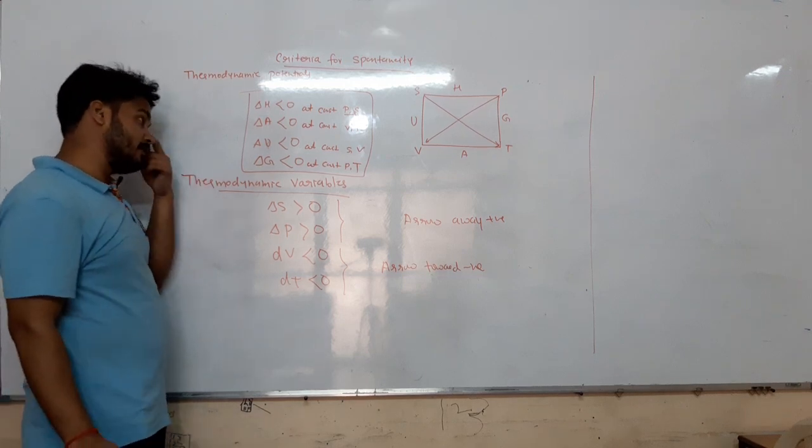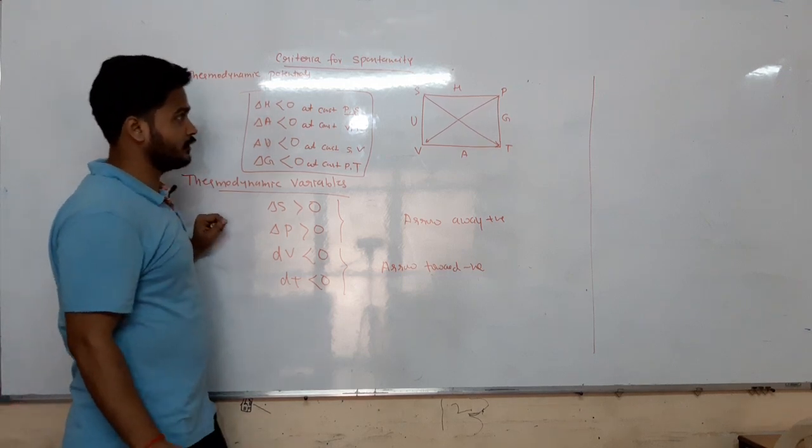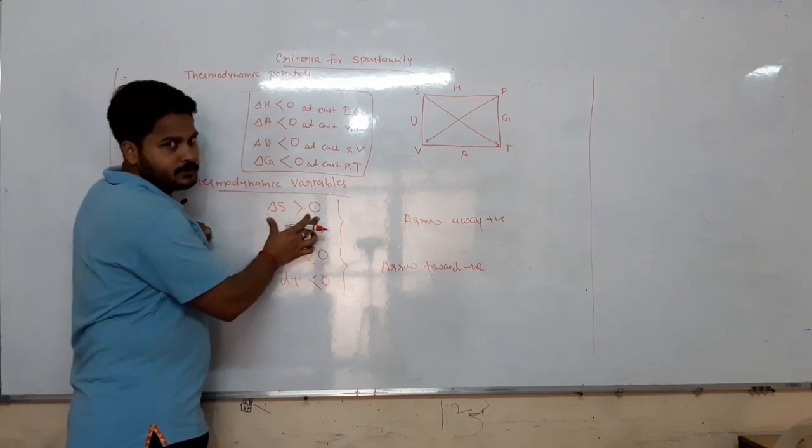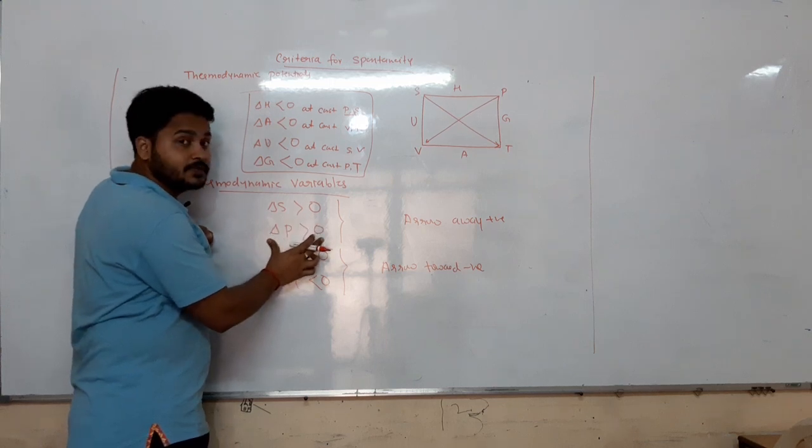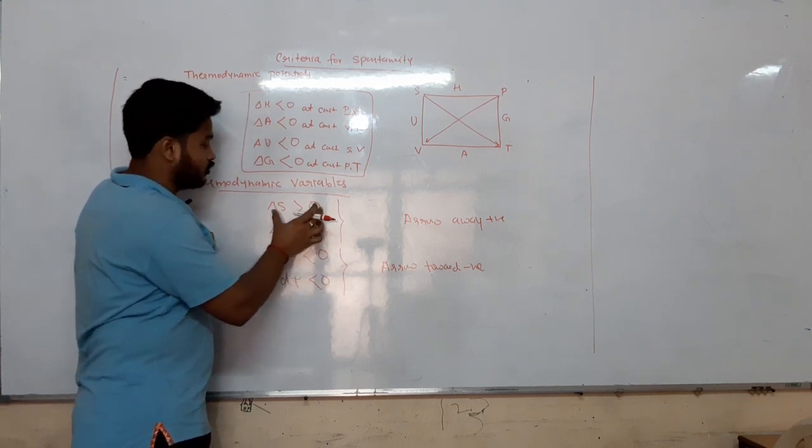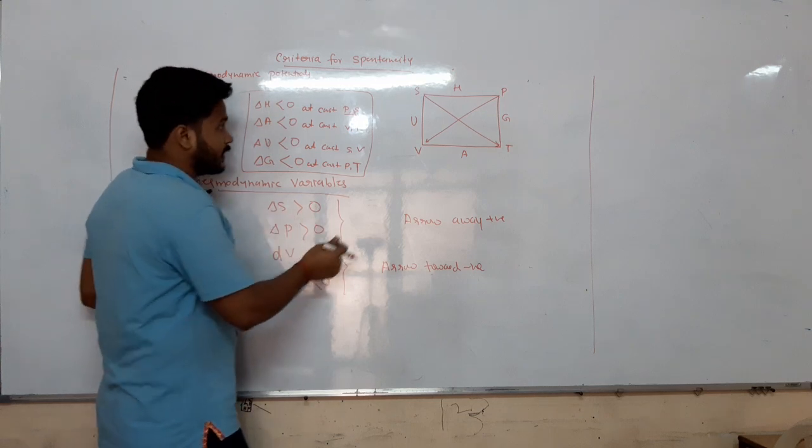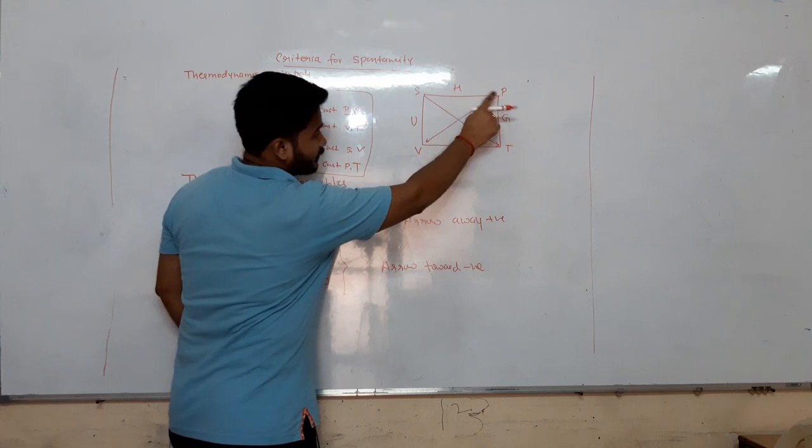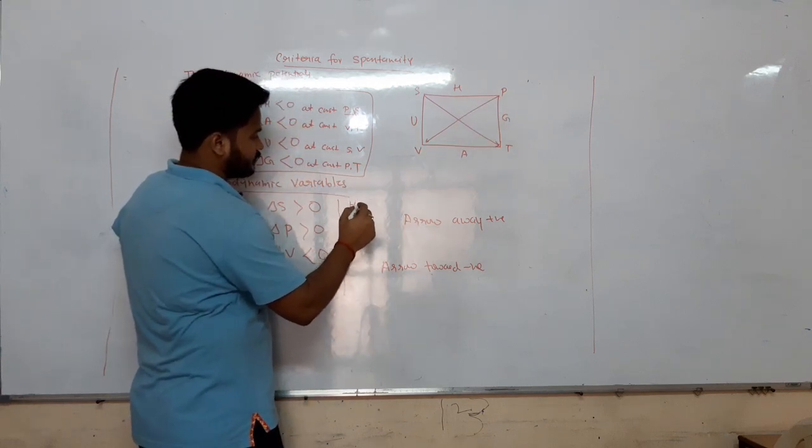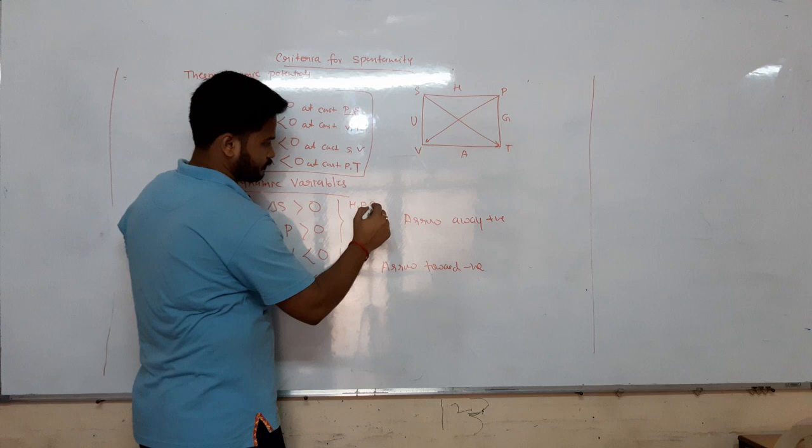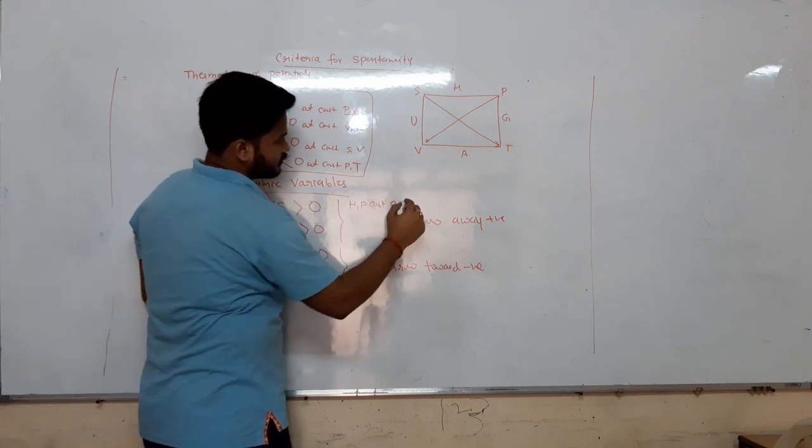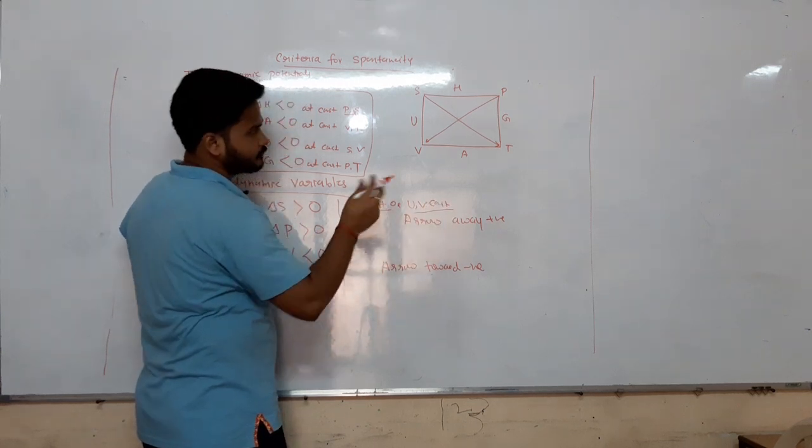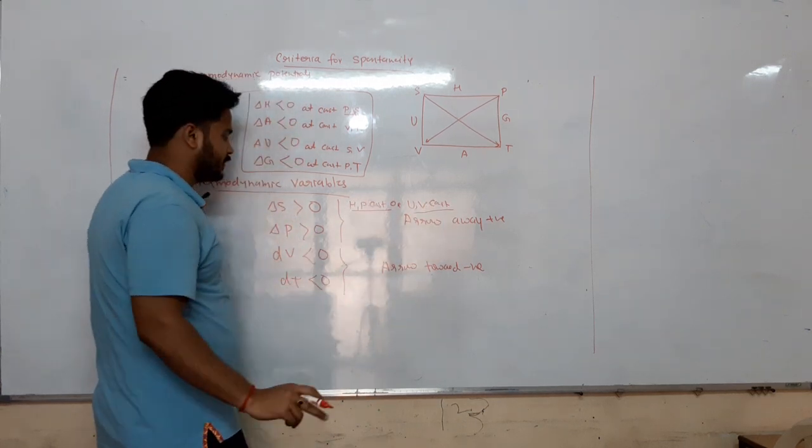Now we talk about thermodynamic variables which will give you spontaneous reactions. For entropy, the change in entropy should be positive - delta S positive. In this case, you have to get either H,P constant or U,V constant.